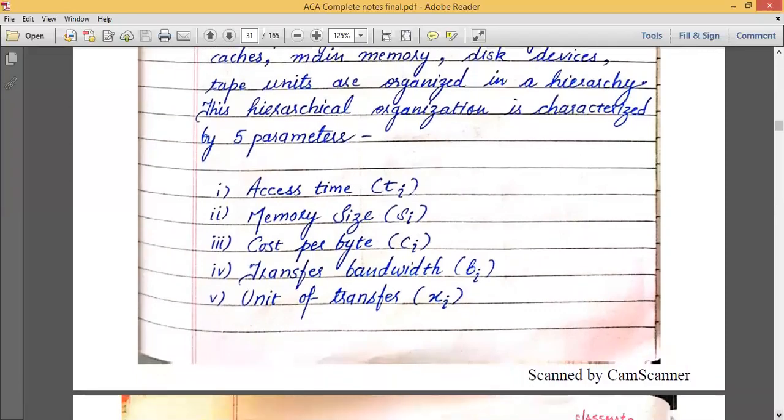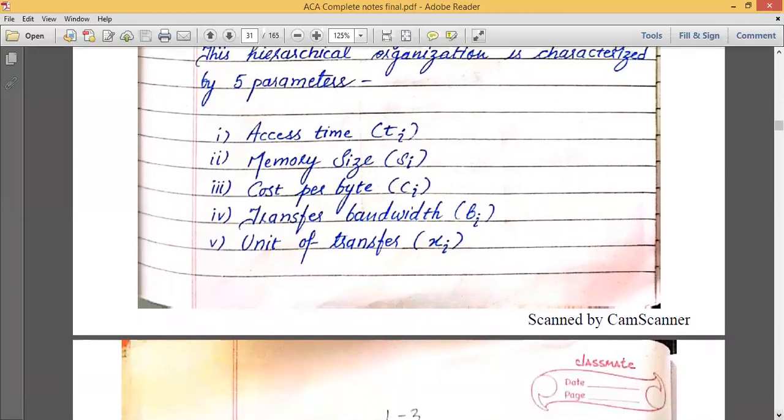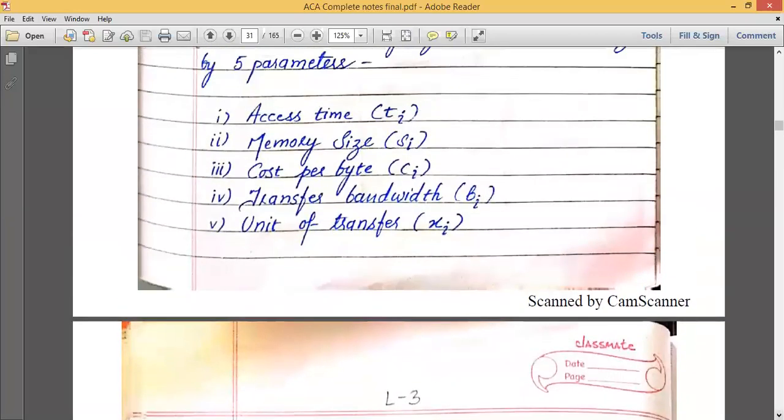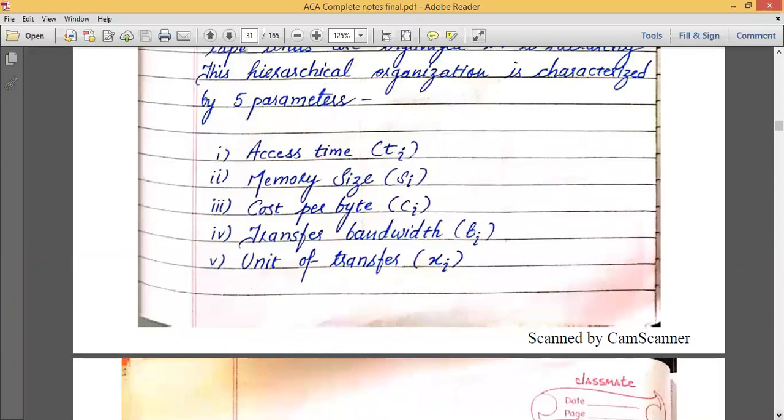The first one is access time, which we represent as Ti. Memory size, which we represent as Si. Cost per byte, which we represent as Ci. Transfer bandwidth, which we represent as Bi. And unit of transfer, which we represent as Ui.